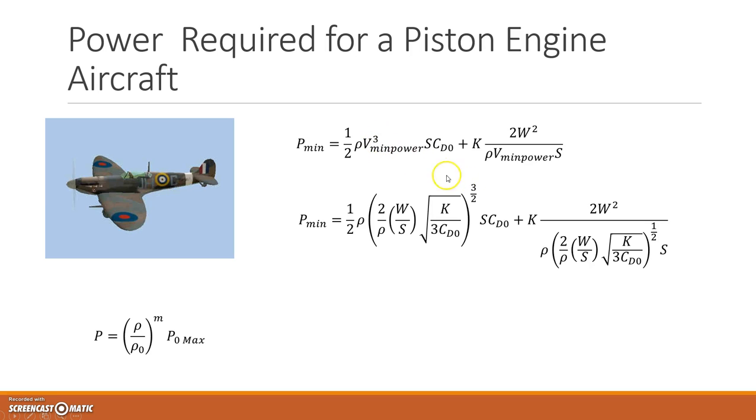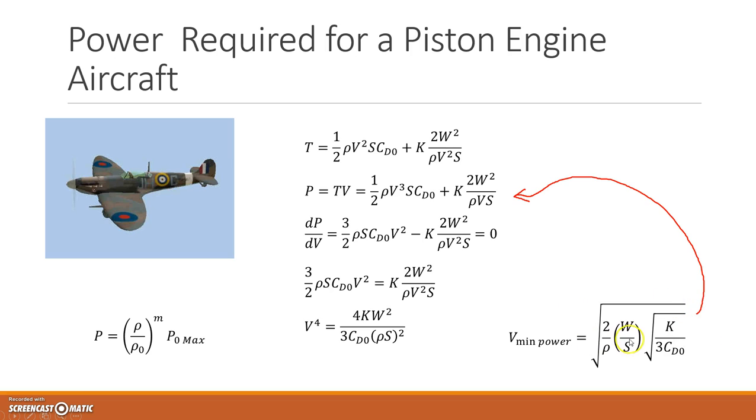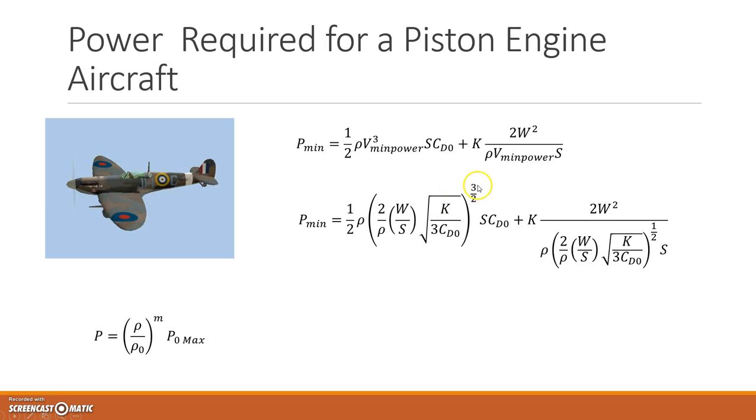So that was to the power of 3, so if I go back, this guy here is really 2 over rho, W over S, square root of K over 3CD0, all to the power of a half. So that becomes this power of a half by 3, it's 3 halves. And this is just the minimum power here.